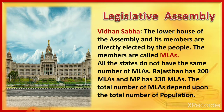The next house is Legislative Assembly, also known as Vidhan Sabha, which is the lower house of the Assembly. Its members are directly elected by the people. The members are called MLAs, that is, Members of Legislative Assembly. All states do not have the same number of MLAs — Rajasthan has 200 MLAs and MP has 230 MLAs. The total number of MLAs depends upon the total population.